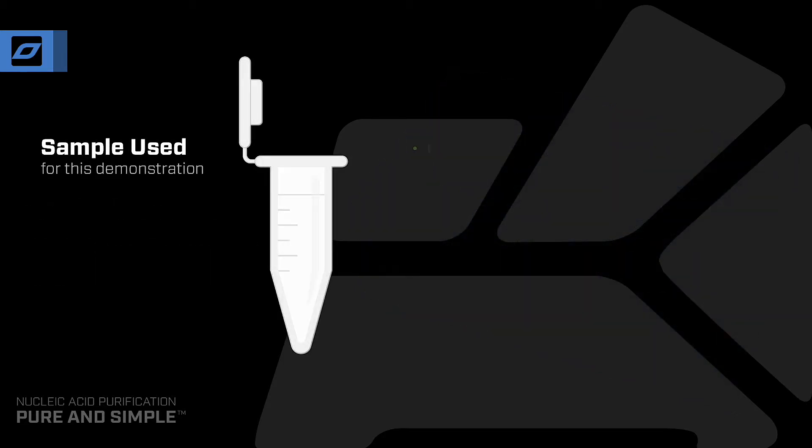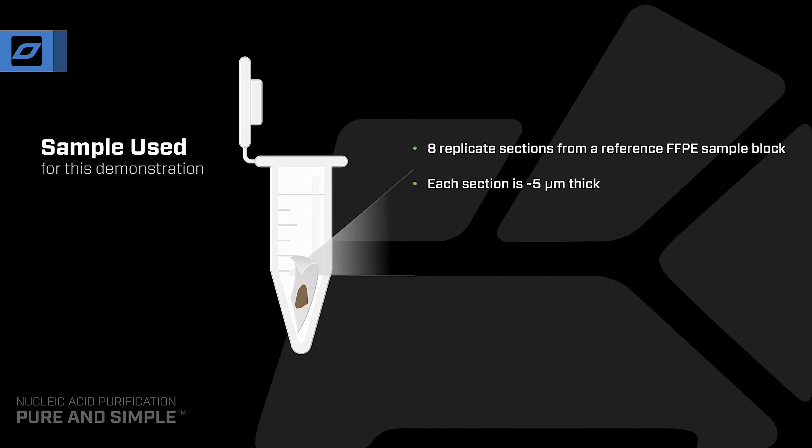For this demonstration, DNA will be extracted and purified from eight replicate sections from a reference FFPE sample block. Each section is approximately 5 microns thick with a tissue area of approximately 20 millimeters squared.